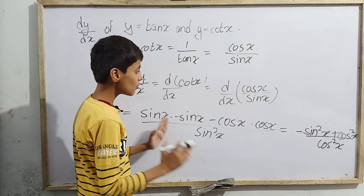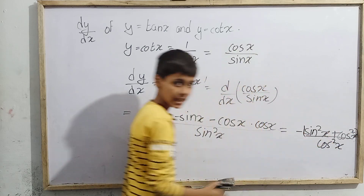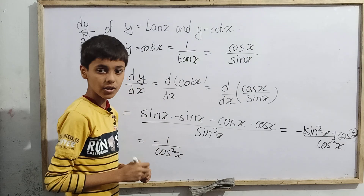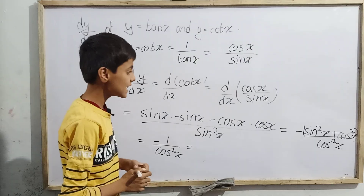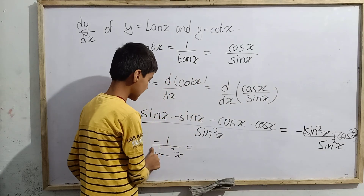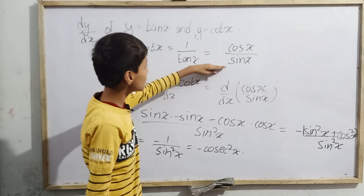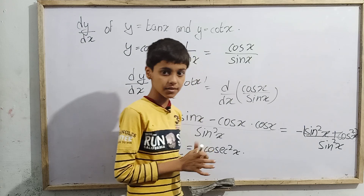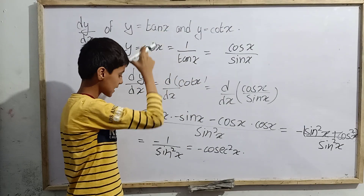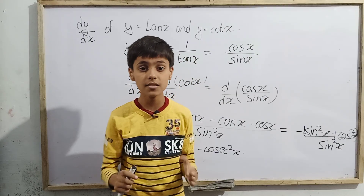Taking the minus sign out as a common factor from the bracket, we get minus (sin²x plus cos²x) divided by sin²x. Since sin²x plus cos²x equals 1, this simplifies to minus 1 by sin²x, which equals minus cosec²x. So the differentiation of cot x, dy/dx for y equals cot x, is minus cosec²x. This is our second answer. Our first answer was sec²x and our second answer is minus cosec²x. This was today's topic on differentiation — thank you.